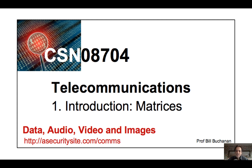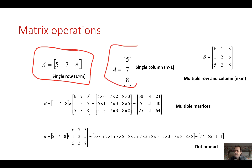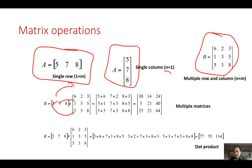The last topic is matrices, which will become more apparent as we go through the module. Matrices are very important for the manipulation of bits. A matrix can be a single row (1 by M), a single column (N by 1), or multiple rows and columns. When we multiply matrices together, each row element multiplies the corresponding column element to give the resulting values.